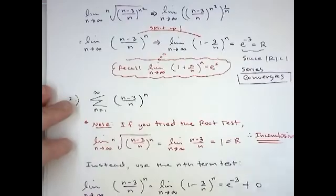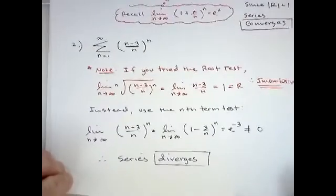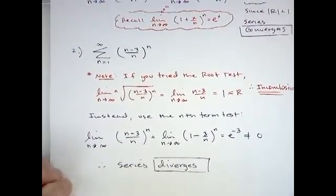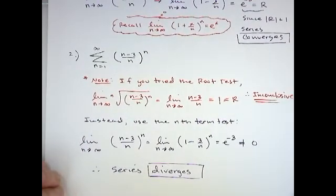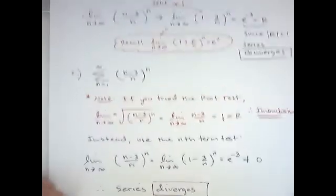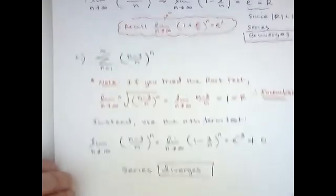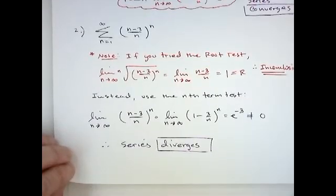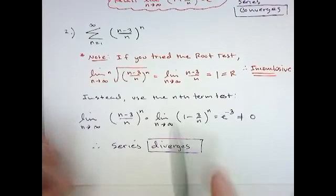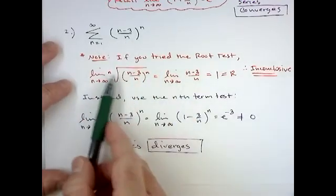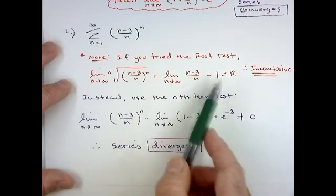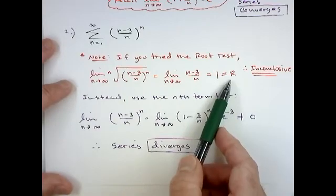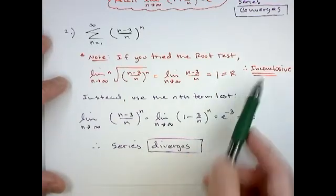Okay. Kind of related to that, if, and it might be a hint having done what we just did, I think this problem shows up in the root test section of the book. And so it can be a little bit tricky because you're thinking of taking the root of this one, but if you try to do the root test and you took the nth root of that, that would leave you with n minus 3 over n, which would just go to 1. And remember, if you use the root test and you get 1 for your limit, it's inconclusive.